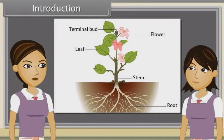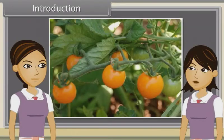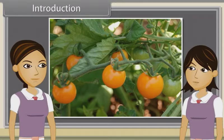We have already discussed characteristics, types, modifications and functions of roots, stems, leaf, inflorescence and flowers. Now we will study sporogenesis, gametogenesis, pollination, fertilization, fruits and seeds.